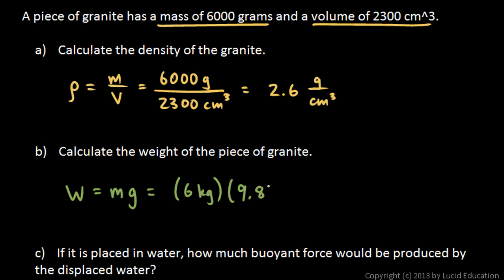And g is 9.8 meters per second squared. And then these units here, kilograms times meters per second squared, that will give us a weight in newtons. So 6 times 9.8 is 58.8 newtons. So that's the weight. That's the downward force of gravity on this piece of granite.